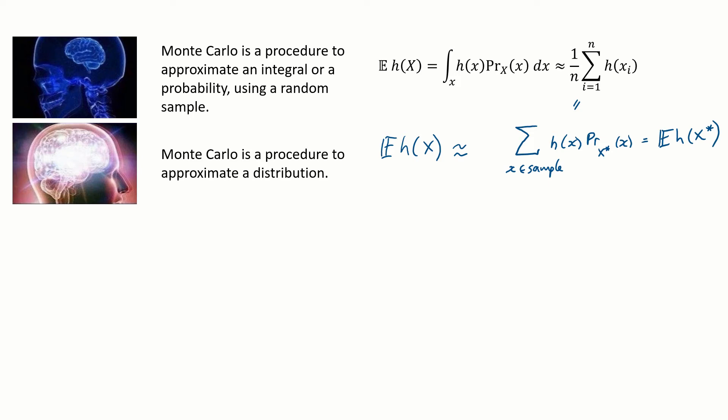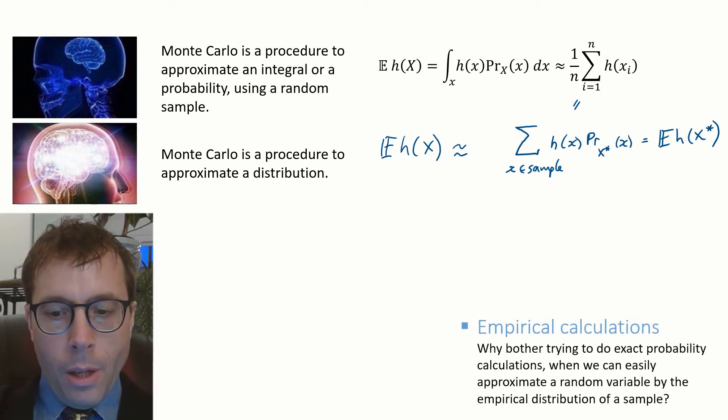Don't read Monte Carlo as just a way to approximate an integral. Read it as a way to approximate the random variable x itself. This approximation works for any readout function h, so that's not the important thing here. The message is, why bother trying to do exact probability calculations when it's perfectly easy to approximate the random variables we're interested in and to do calculations with these approximations.